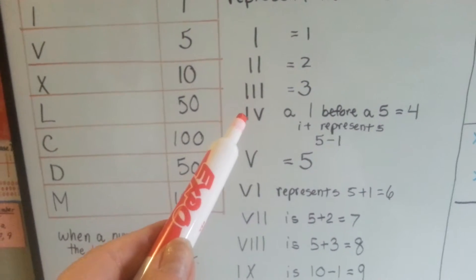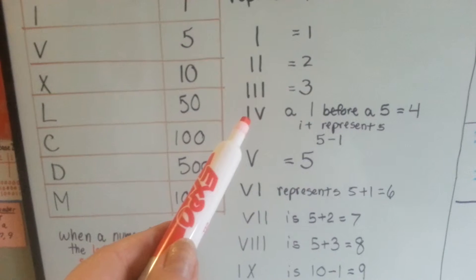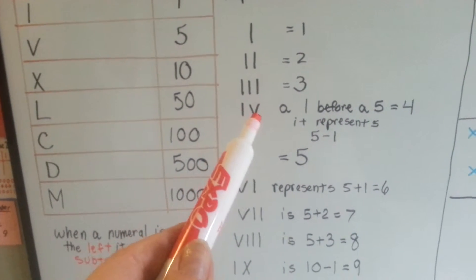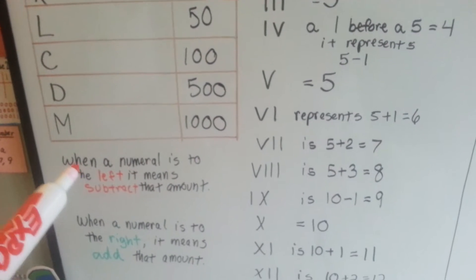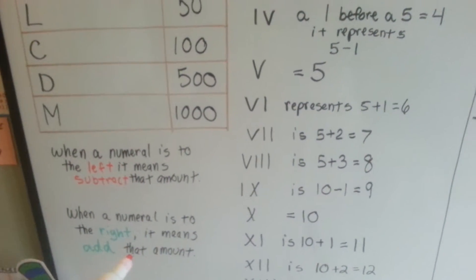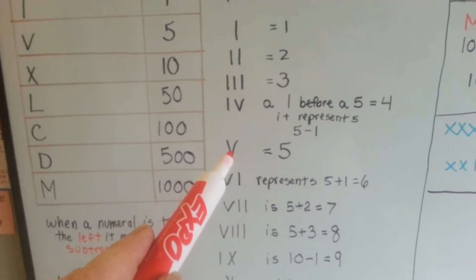If you put it to the left side of the letter, like this I is on the left side of the V, it means 1 from 5, which means 4. So when it's on the left side, we subtract. When it's on the right side, we add.